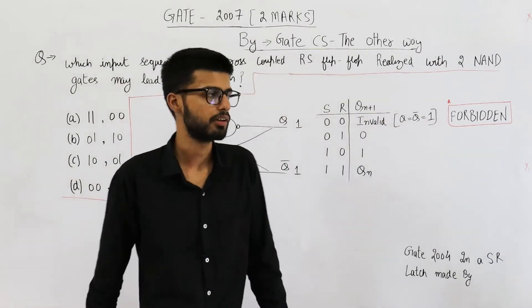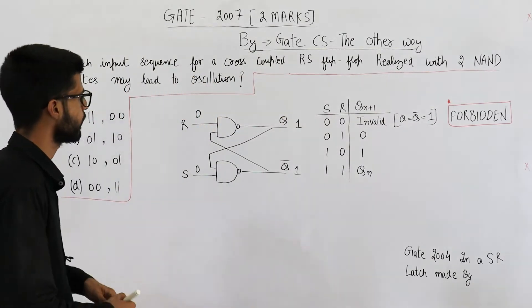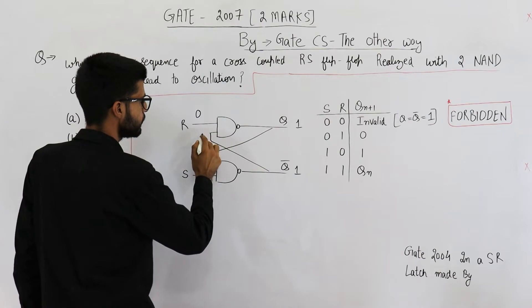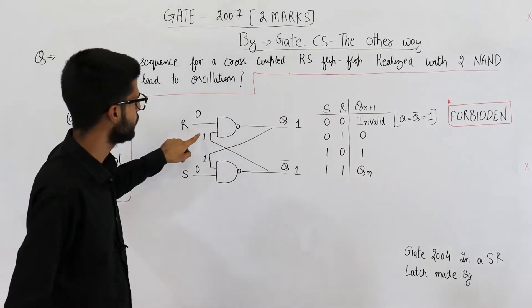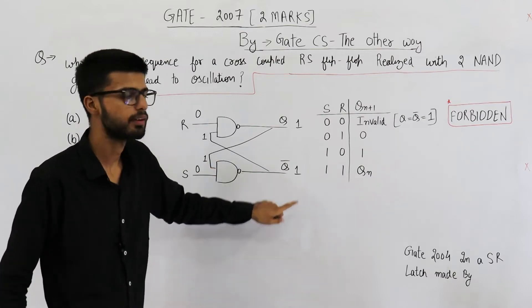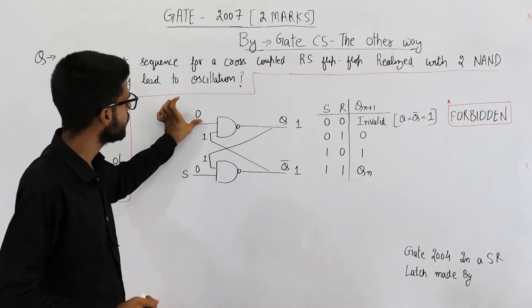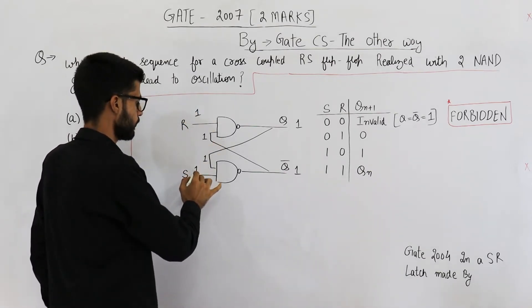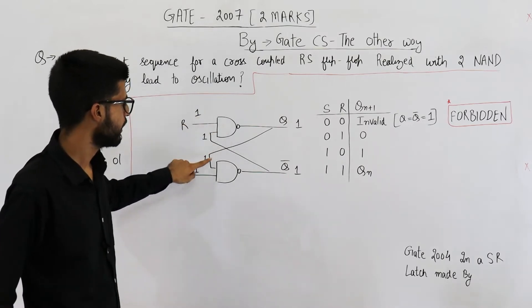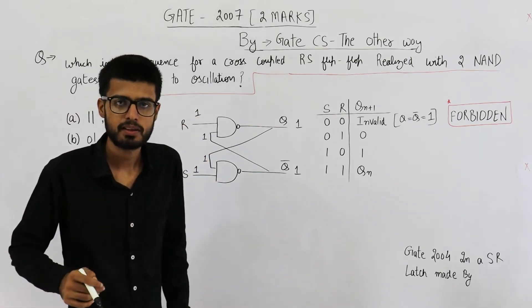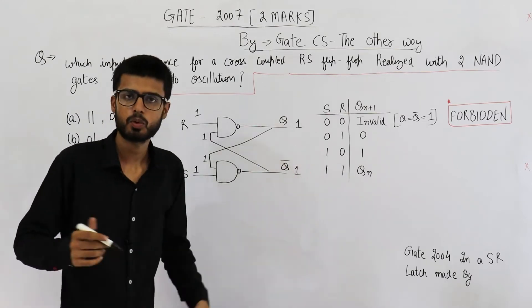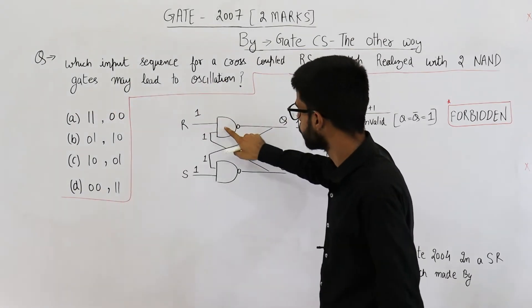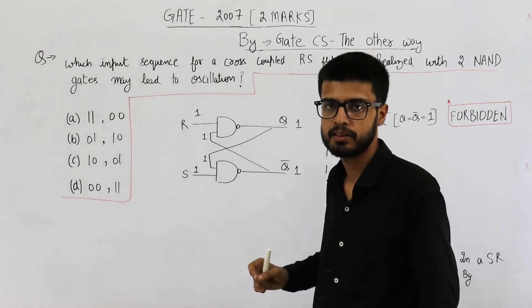Because Q and Q complement both will be 1. There's one more problem to this. See this one will reach here and this one will reach here. Now 0 NAND 1 is 1. 0 NAND 1 is 1. Circuit is stable here. But if I immediately make these inputs 1 1.